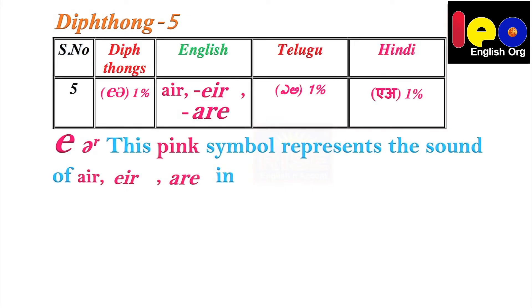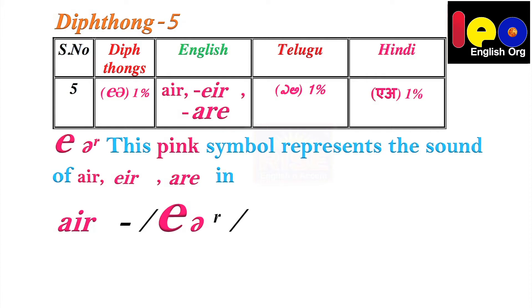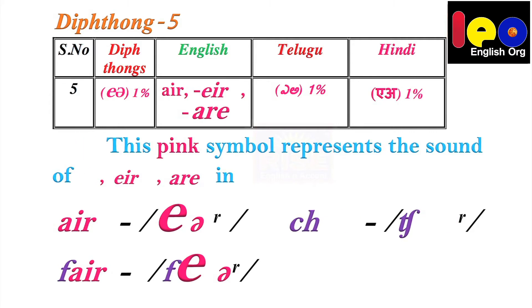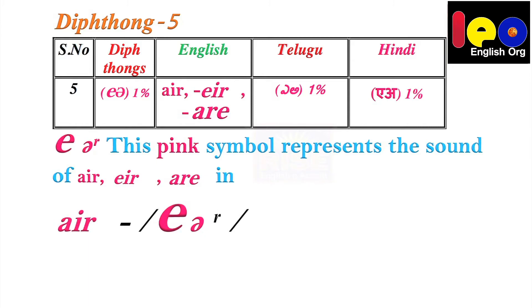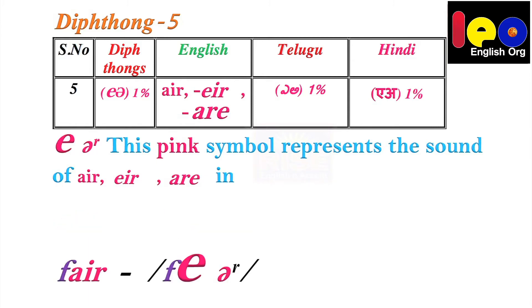Diphthong 5. Below this table you can see E that sounds like 'A', and beside that A and R — 'air'. This combination represents the sound of AIR in 'air', AIR in 'fair', AIR in 'chair', AIR in 'hair', EIR in 'there', ARE in 'care'. Don't say 'air', say 'eə'. Don't say 'fair', say 'feə'. Don't say 'chair', say 'tʃeə'.